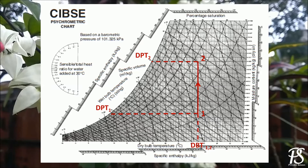Similar is the case for wet bulb temperature, which are represented by the inclined uniformly spaced lines. In this case, the wet bulb temperature for points 1 and 2 are not the same. So, question number 2.